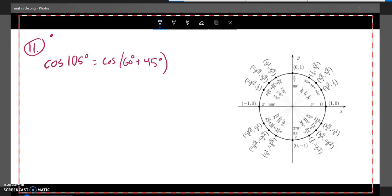We're supposed to find the exact value of the cosine of 105 degrees. And we can split up cosine this way. We actually were asked to. And so I'm going to use that addition formula for cosine.